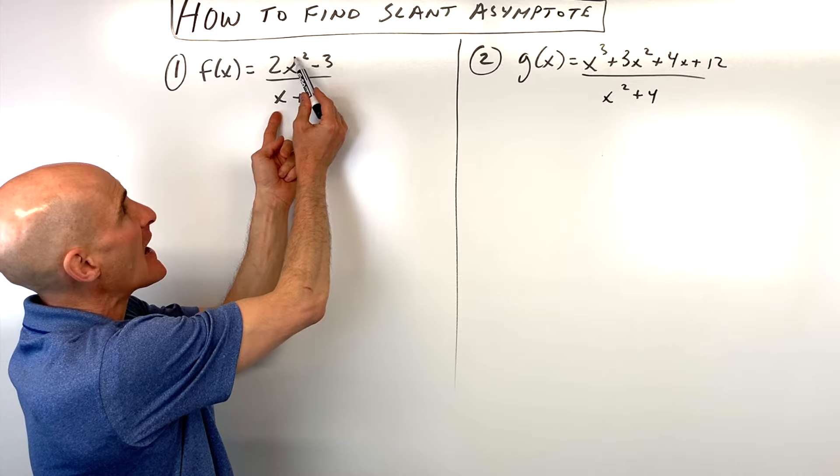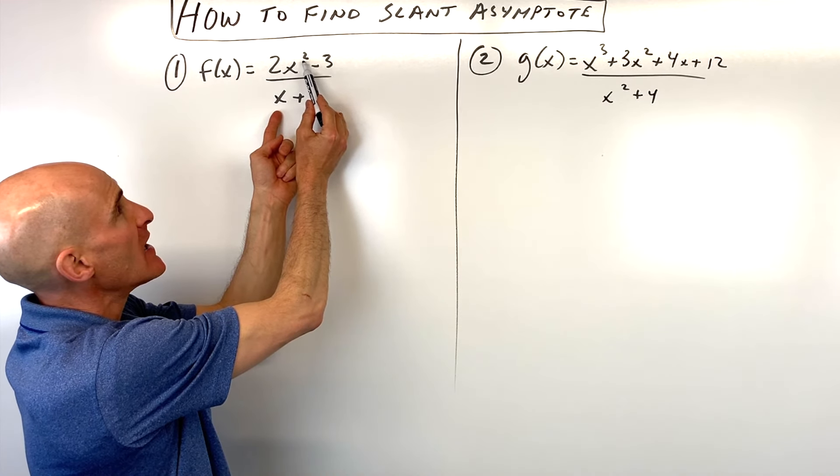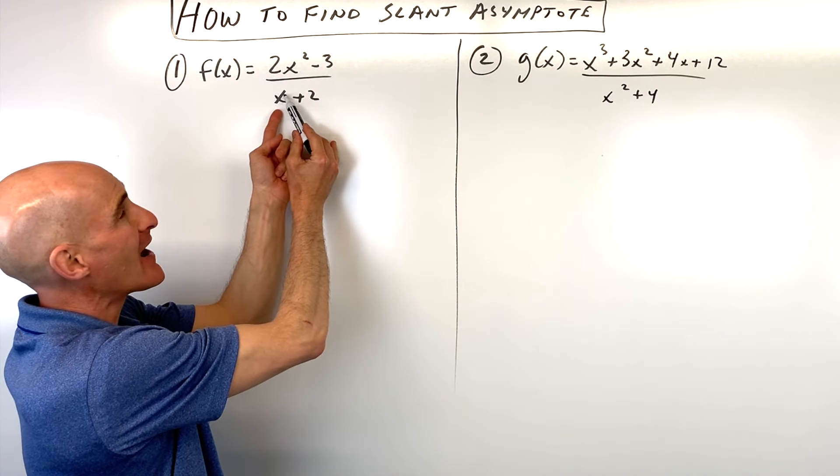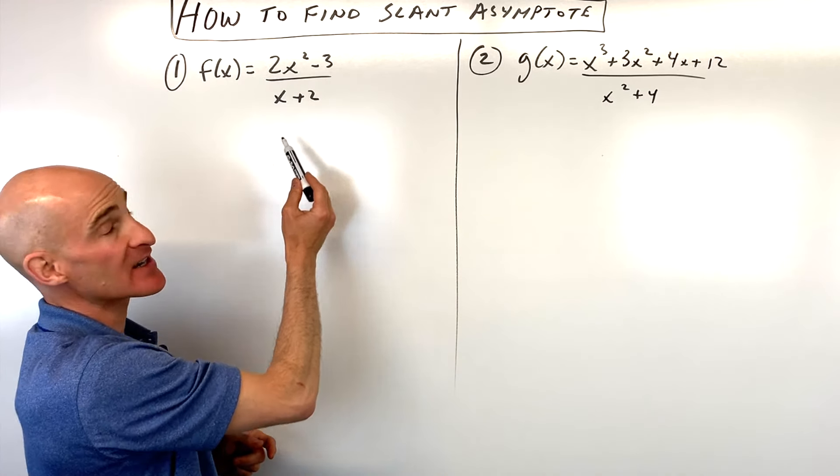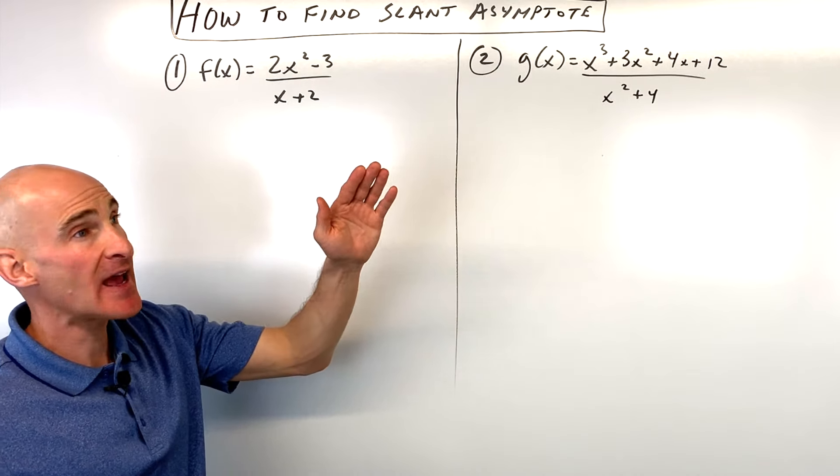Well, you know because the degree of the highest power term in the numerator is one degree higher than the highest degree term in the denominator. So see how this is x squared and this is x to the first? That's how we know we have a slant asymptote.